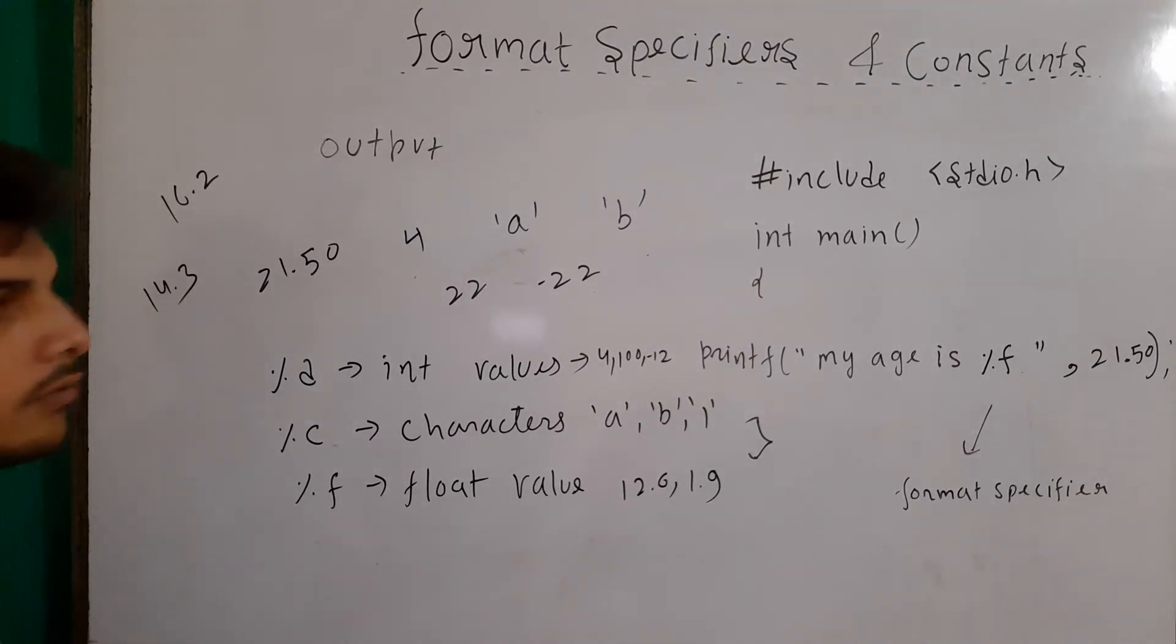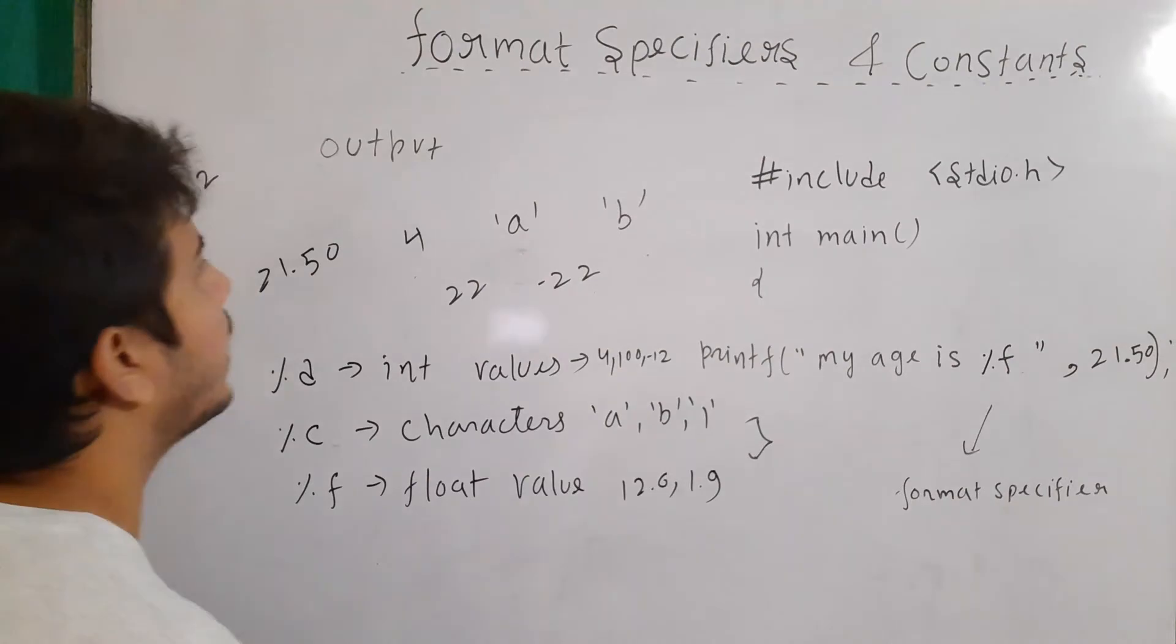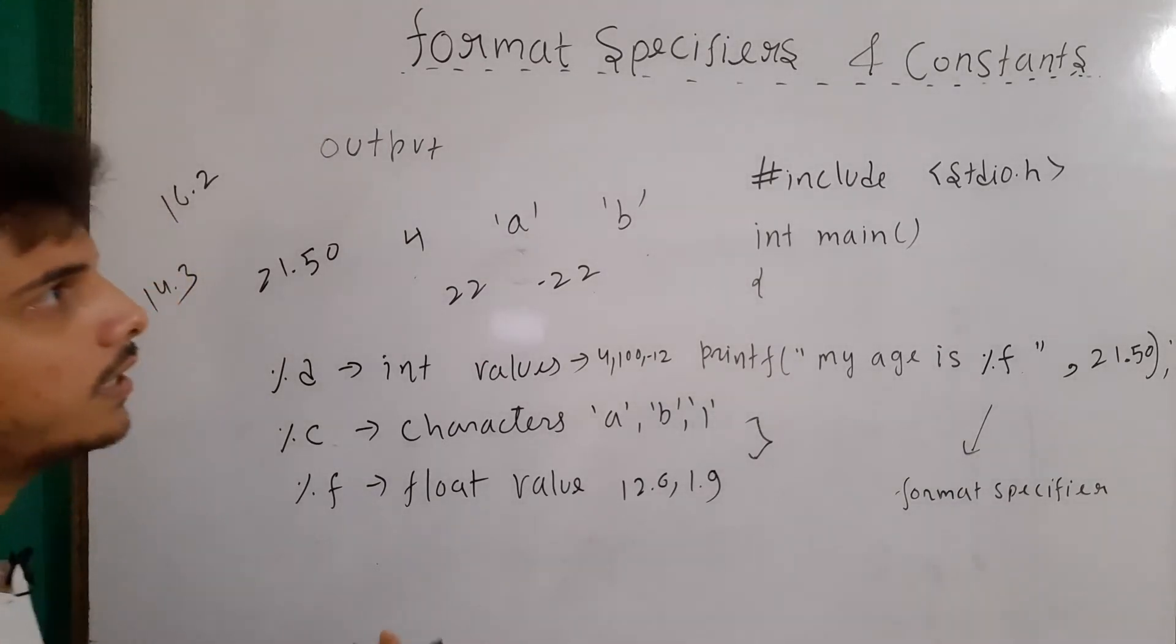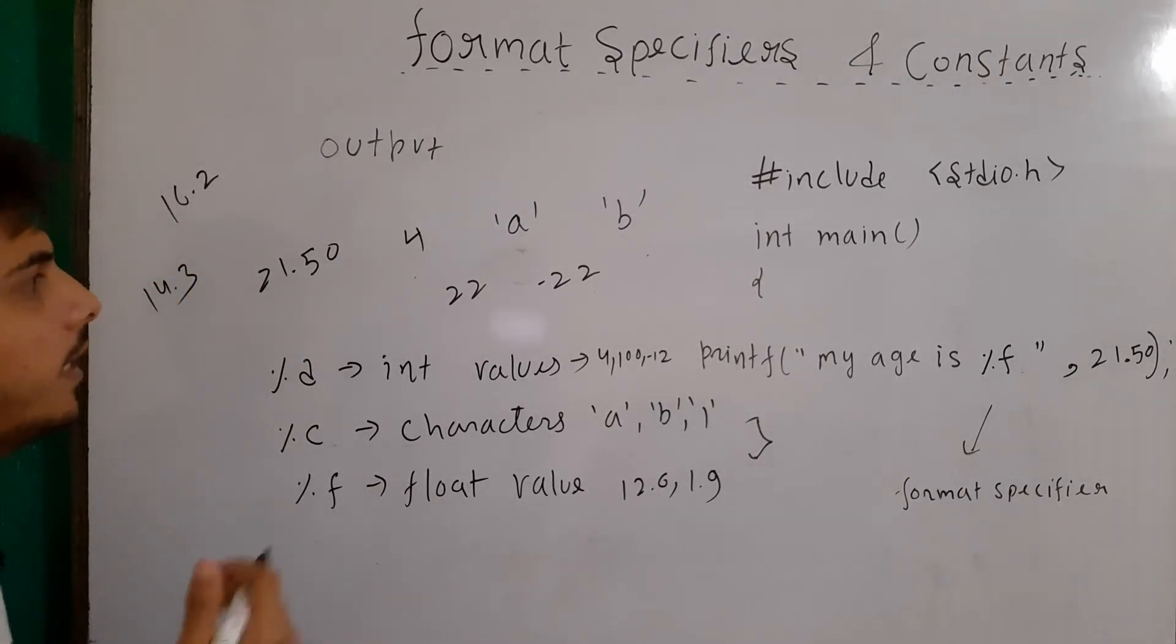So what are constants? Constants are the values that can never change. For example, I cannot make 22 to 23. I cannot make 4 with the value of 5. 4 will always remain 4 and 5 will be 5 on its own. So constants are the values in its own.